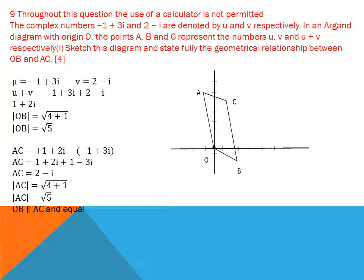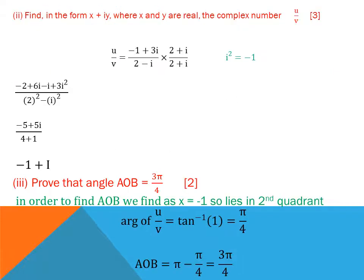Part two: find u/v in the form x + iy. Substituting u = −1 + 3i and v = 2 − i, then rationalising by multiplying numerator and denominator by (2 + i): using i² = −1, the result is −i + i ... simplifying gives u/v = −1 + i (or i − 1).